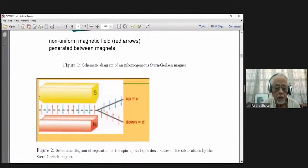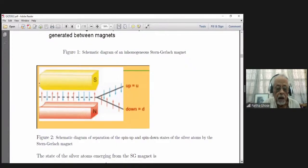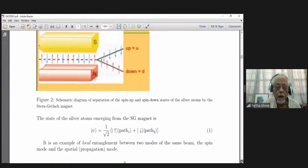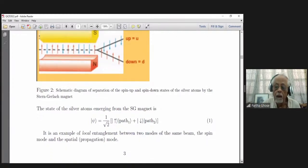out of the magnet in two different—you will see two different spots. So this is a schematic diagram of the separation of spin up and spin down from the silver atoms. The state of the silver atoms emerging from that Stern-Gerlach magnet can be written as like this.